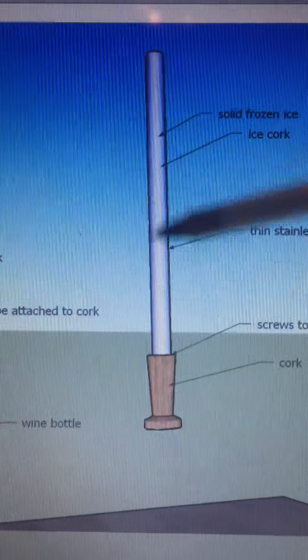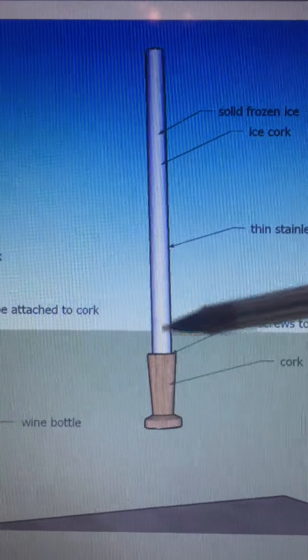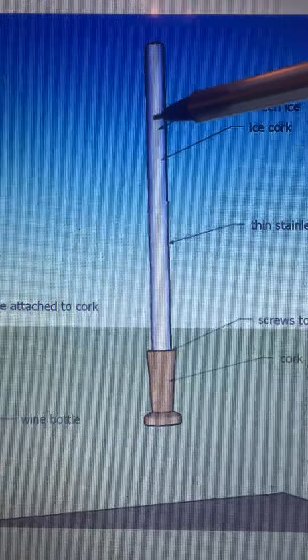It's simply a metal tube, which is made of stainless steel. It screws down to a cork. The middle of the tube is hollow.